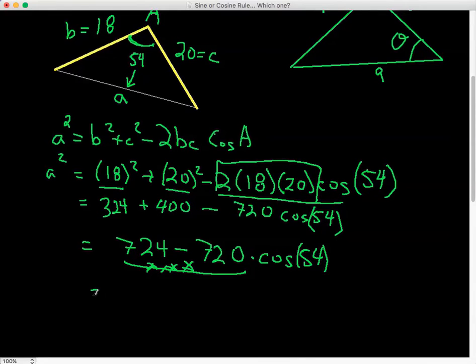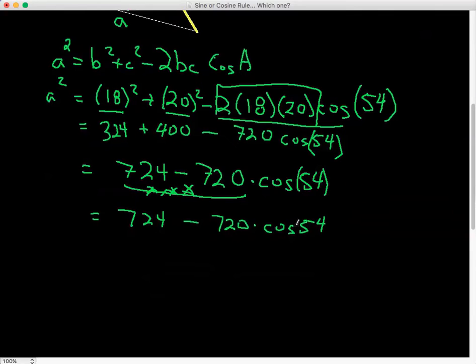So you need to, on your calculator, go 724 minus 720 times cos of 54. So according to your order of operations, these two here have to multiply each other, and then you can subtract them.